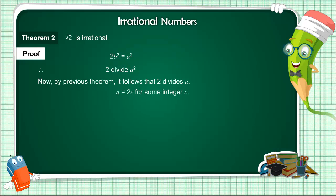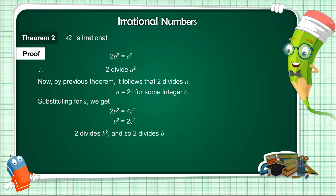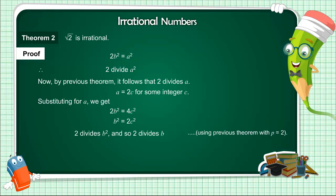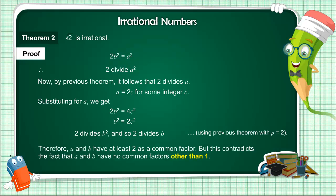So we can write A = 2C for some integer C. Substituting for A, we get 2B² = 4C², that is, B² = 2C². This means that 2 divides B², and so 2 divides B, again using the previous theorem with P = 2. Therefore, A and B have at least 2 as a common factor.